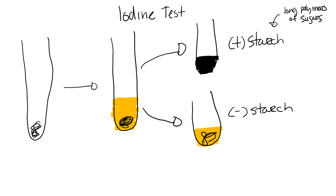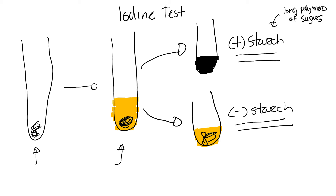To review the iodine test: take your sample, treat it with a few drops of iodine, and wait. If it turns black, it is positive for starch. If it remains dark brown, it is negative for starch.